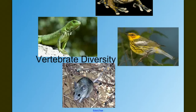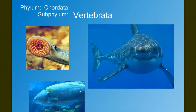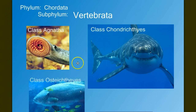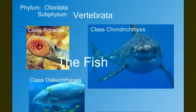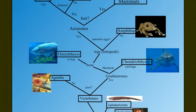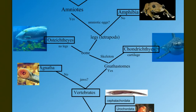This is our second video in our series on vertebrate diversity. In this video, we're going to focus on the subphylum Vertebrata, class Agnatha, Chondrichthyes, and Osteichthyes — the fish. In our last video, we introduced the whole subphylum Vertebrata. In this video, we're going to zoom in on the three classes of fish.